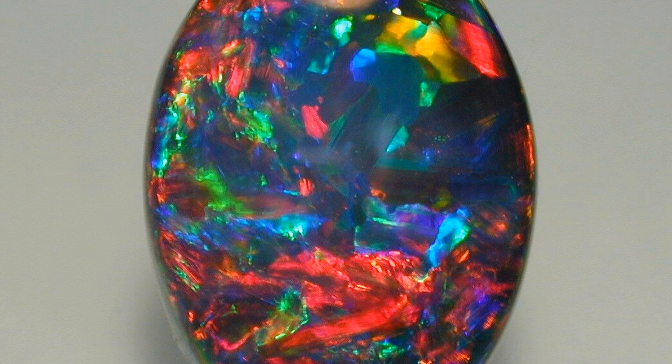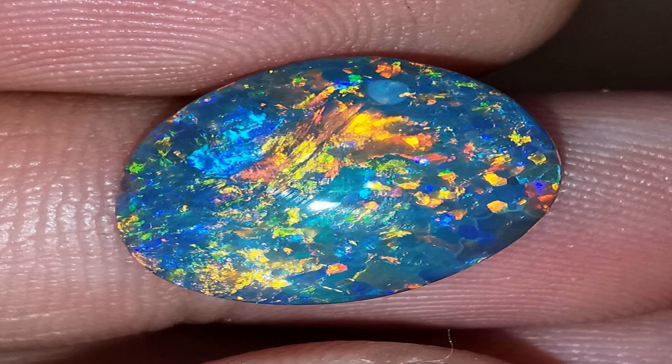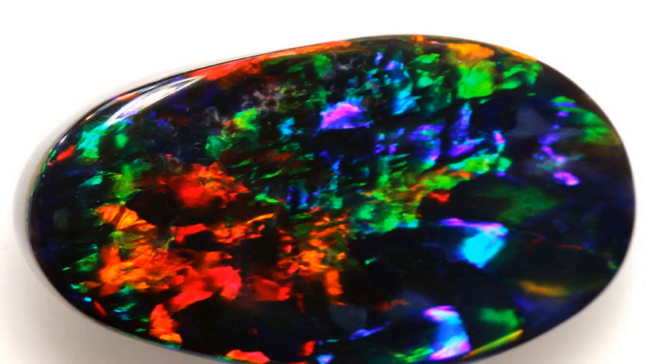Boulder opals are formed on the edges of ironstone boulders and are known for retaining the appearance of the original host rock, which adds to their unique aesthetic. Finally, crystal opals are transparent or semi-transparent and are characterized by a colorless body with play of color. These precious opals are among the most beautiful and unique gems found in nature, and their beauty has captivated people for centuries.